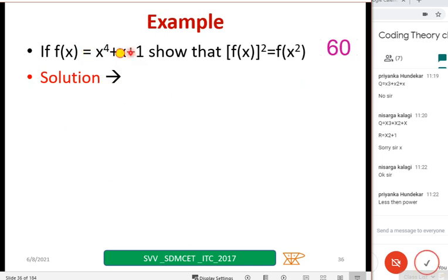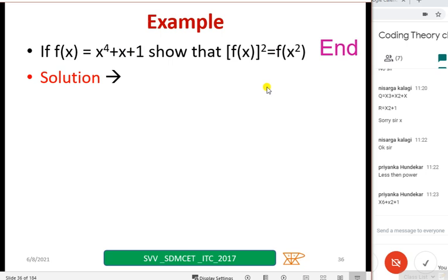So now show that, if f of x equal to x4 plus x plus 1, f of x whole square equal to f of x square. I think this you might have done already. It is like a repetition. Do it fast, take a minute or two. Complete it. Result, so that you people can compare what you got.